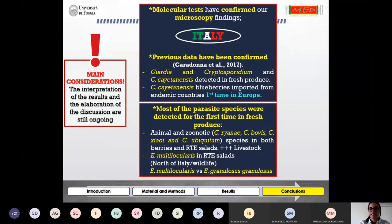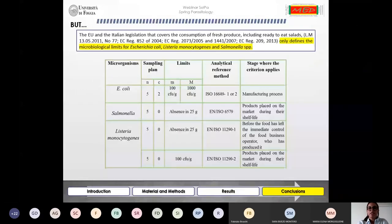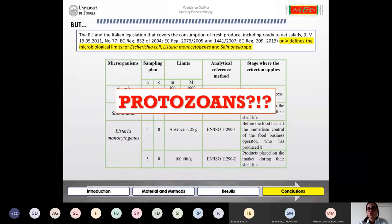These fresh products have been found contaminated in the past and in this study, so when they are sold on the market, they may represent a risk for public health. However, the EU and Italian legislation that covers the consumption of these products only define the microbiological limits for bacteria. The question is: shall protozoans be included in the legislation as well as bacteria?